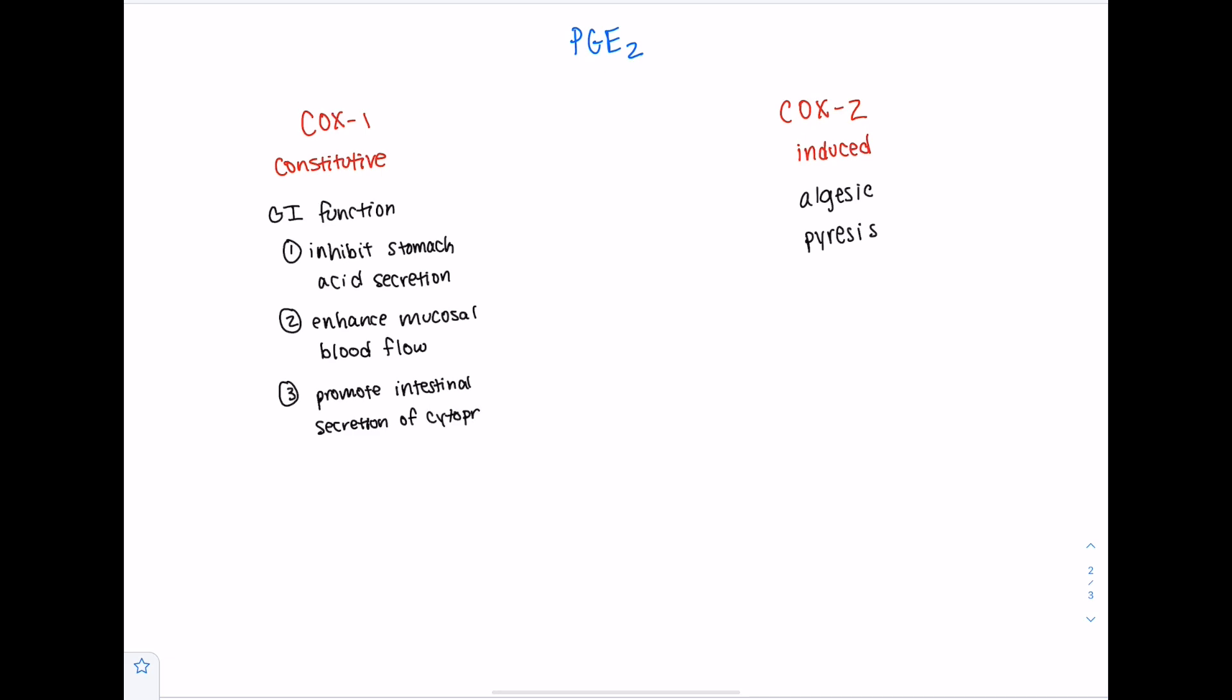So why is this important? Well, if you're taking an NSAID that is a COX1 inhibitor, that means you're not going to be forming PGE2 via COX1, and you're not going to be having these beneficial GI functions like inhibiting stomach acid secretion, enhancing mucosal blood flow, promoting secretion of cytoprotective mucus. You're going to be losing some of those functions.